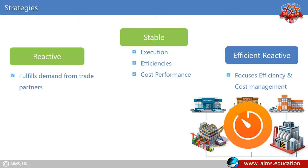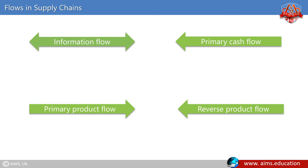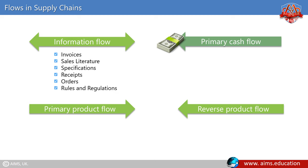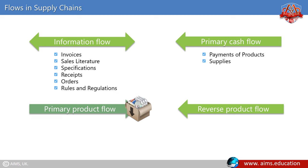Flows in supply chains. There are four flows in supply chains. Information flow includes invoices, sales literature, specifications, receipts, orders and rules and regulations. Primary cash flow includes payments of products and supplies. Primary product flow includes materials, components, supplies, services and finished products.